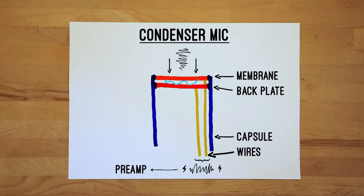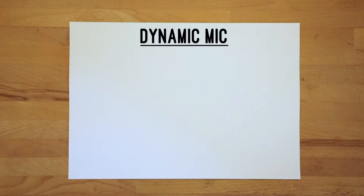As a condenser mic is an active microphone, it requires phantom power, unlike passive microphones that do not need it. An example of a passive microphone is the dynamic microphone, the second category of mics we'll look at.